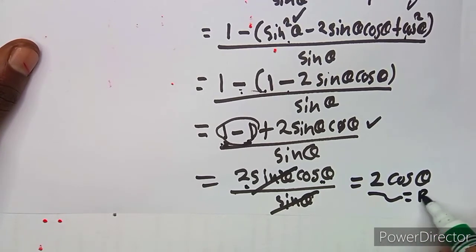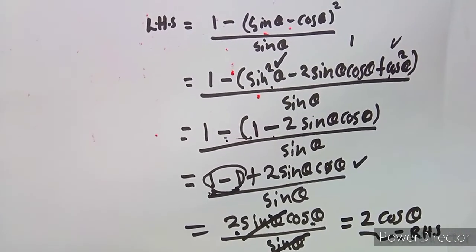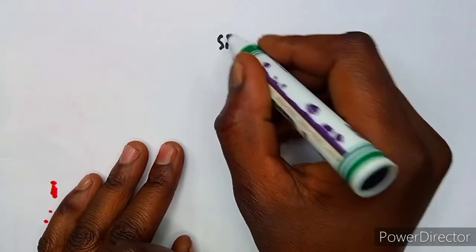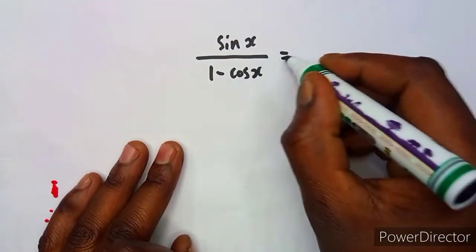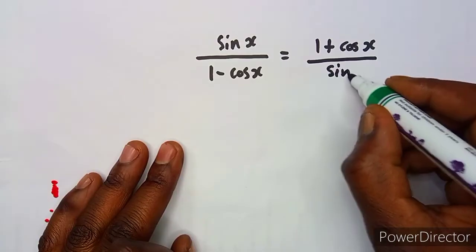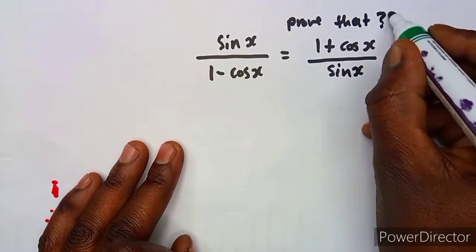That gives us 2 cos theta, which is exactly the same as what we had on the right-hand side — so the identity is proved. They can ask these identities in different ways and formats, so be very careful with the question given. Now let's try an additional question to close: prove that sine x over (1 minus cos x) equals (1 plus cos x) over sine x.